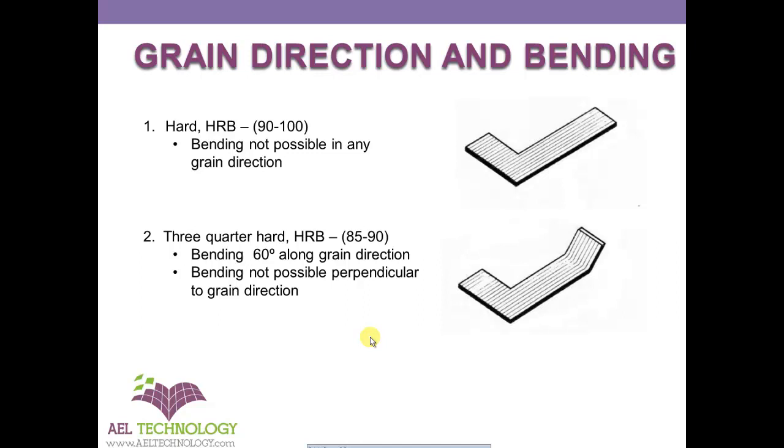It's not possible to do bending on very hard sheet, that is Rockwell B scale 90 to 100. For all non-bending, we will use this type of hard materials.